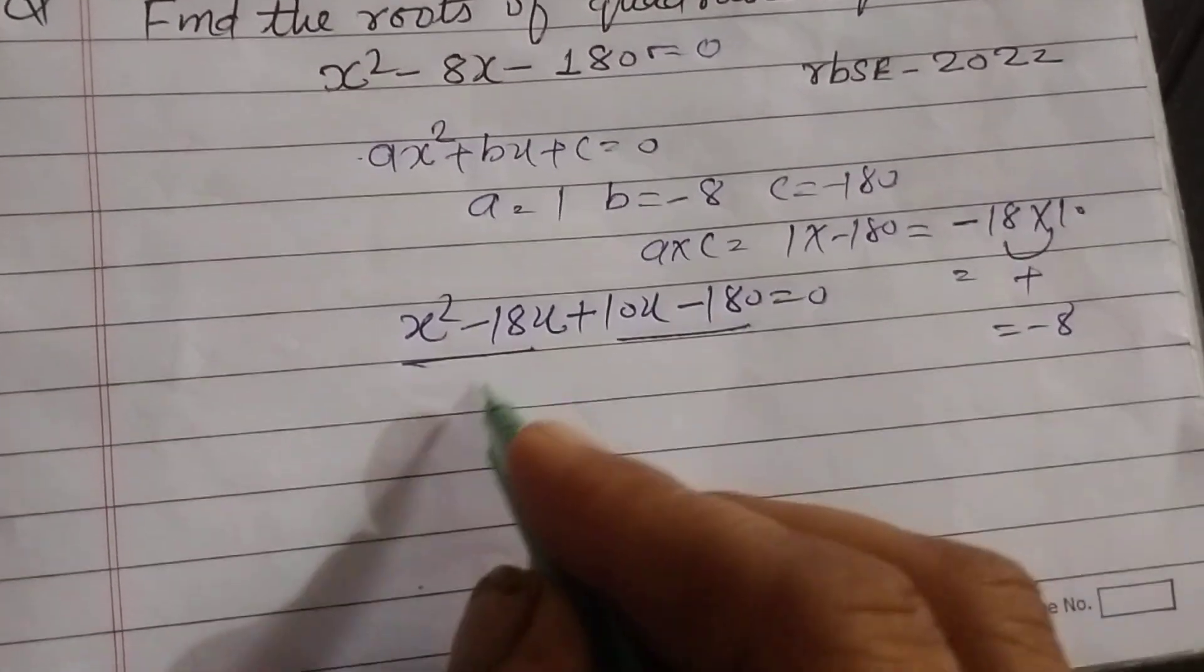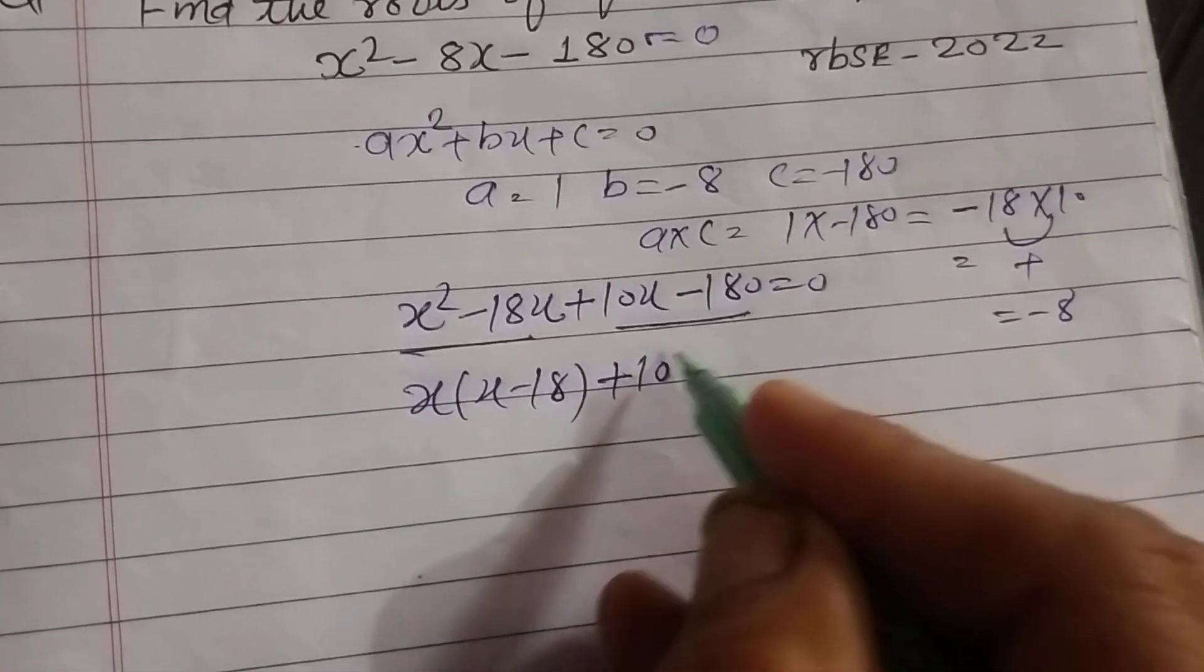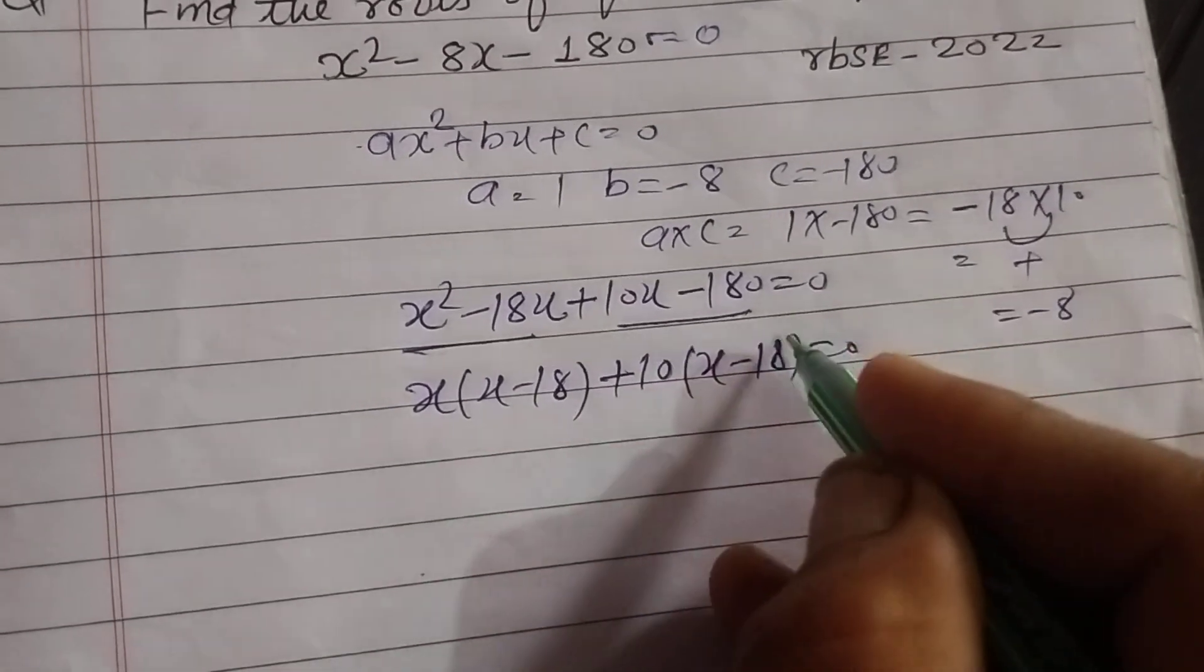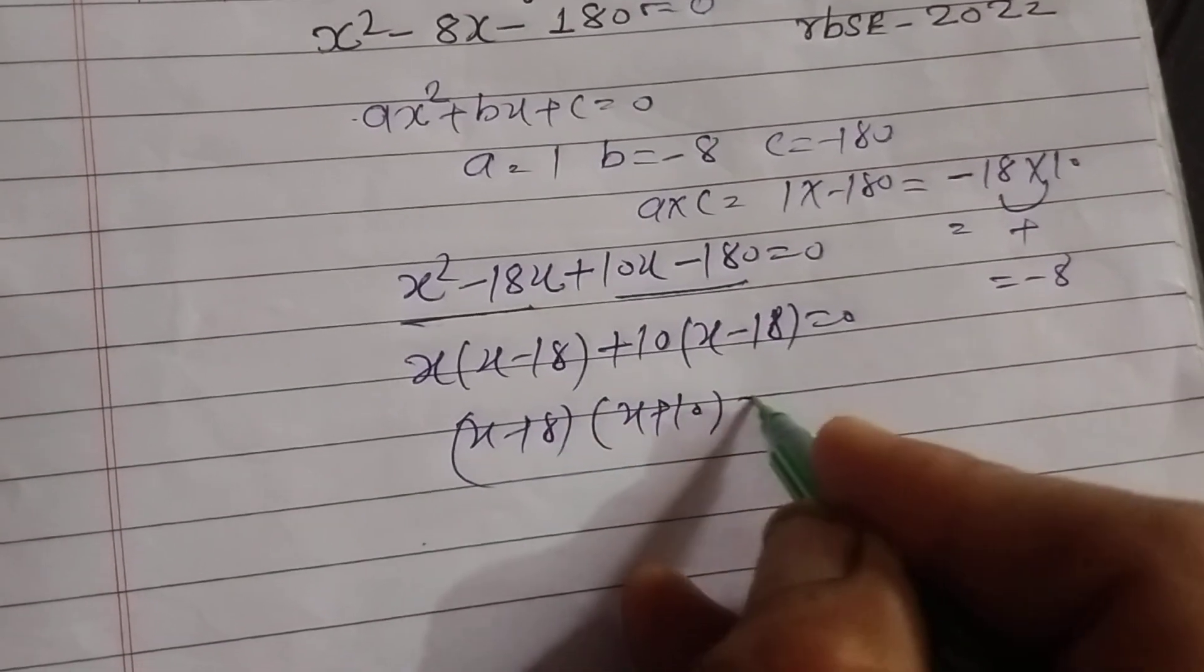Now factoring by grouping: x(x - 18) + 10(x - 18) = 0. So (x - 18)(x + 10) = 0.